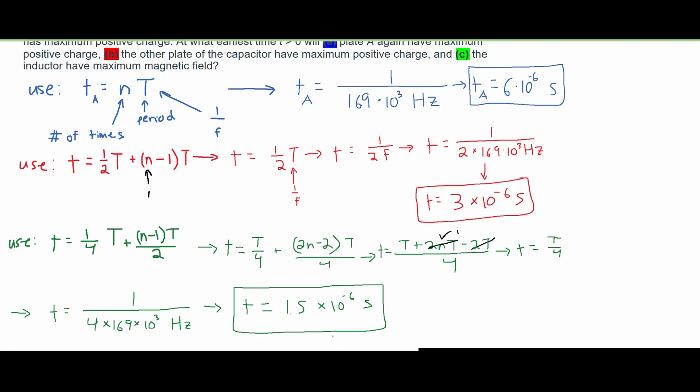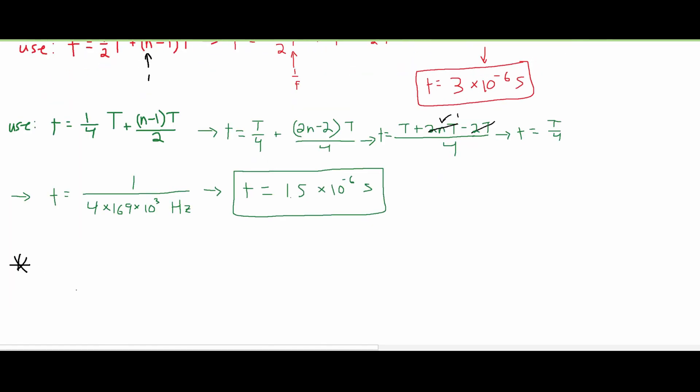If we need to convert this to microseconds, we can write here that 1 second is equal to 1 times 10 to the 6 microseconds. So if we were to convert this last question right here to microseconds, what we would do is have 1.5 times 10 to the negative 6 seconds, right? Over 1,